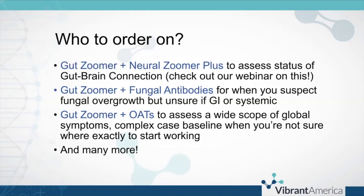GutZoomer and fungal antibodies is also a common combination. If you suspect fungal overgrowth in a patient but are unsure whether it is GI in origin or systemic — it can be one or the other, or sometimes both — fungal antibodies will look for systemic fungal overgrowth, while GutZoomer looks globally in the gut. Then there's GutZoomer and organic acids — a great combination for vague and overlapping global symptoms where there's not really one thing that jumps out. For those chronic complex cases, this pairing gives you a baseline assessment of gut status and helps you narrow down what other directions to take with that patient.